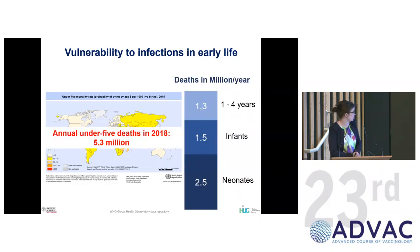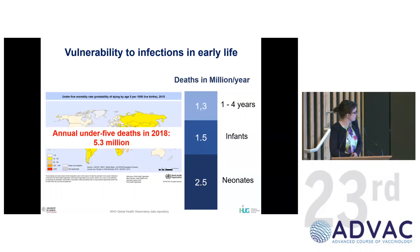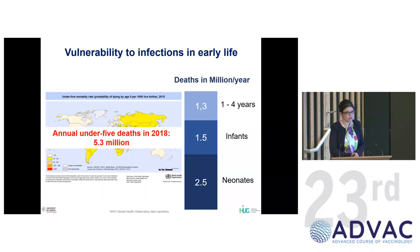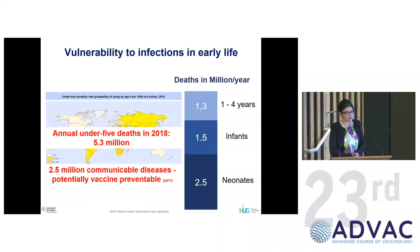To put numbers on it — and these are rough estimates — there are around 5.3 million deaths of children under the age of five every year, mostly neonates and then infants, which I define as up to age one, and then 1.3 million aged one to four. The sad thing is that half of these would be preventable, or potentially preventable, by vaccination. This is why vaccination in early life is important.